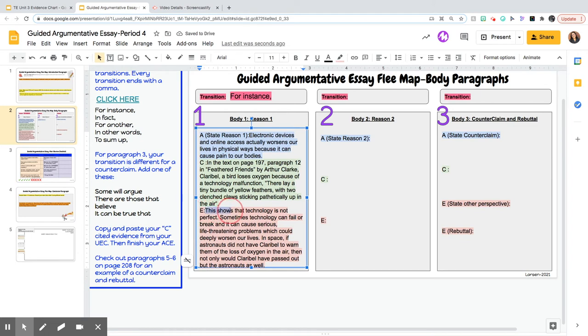Here we go. In my E I give a stem. This shows that. Then I answer it. This shows that technology is not perfect. Okay let me explain that a little bit more. Sometimes technology can fail or break. I think it can cause serious life-threatening problems which could deeply worsen our lives. So make sure you are recycling some of those words again from your prompt and your claim and mentioning them again. So I'm connecting how technology can fail sometimes how it's not perfect and how because technology can fail it can cause life-threatening problems and that could actually worsen our lives. And I'm going to elaborate a little bit. I'm going to give an if then elaboration. So I say in space if astronauts do not have Clarabelle to warn them of the loss of oxygen in the air then not only would Clarabelle have passed out but the astronauts as well. So I give a little bit more elaboration to help support my position here and support my C and my A.